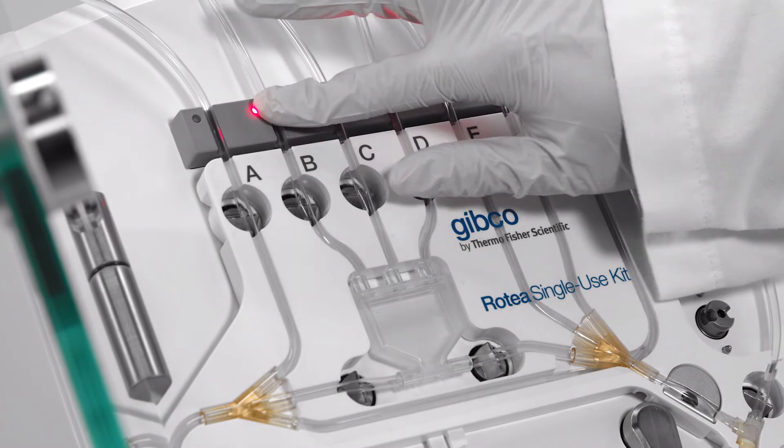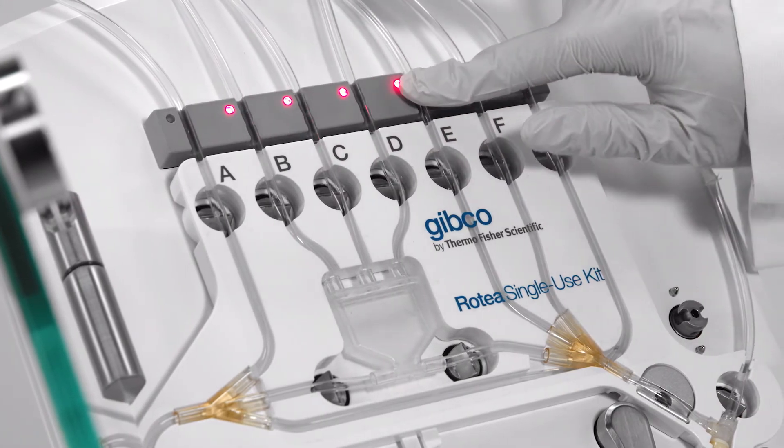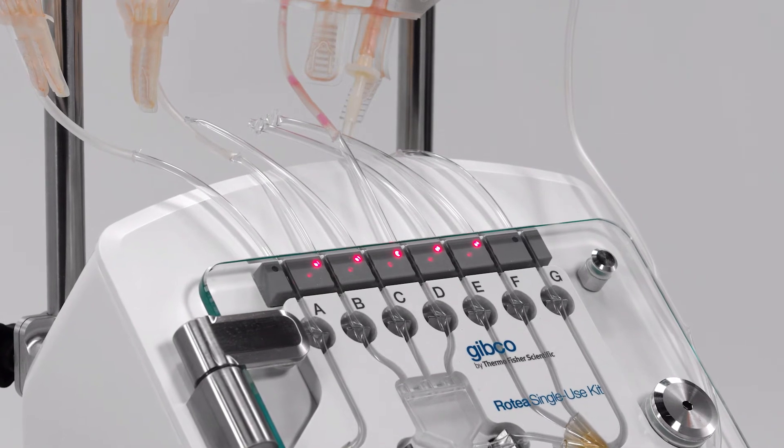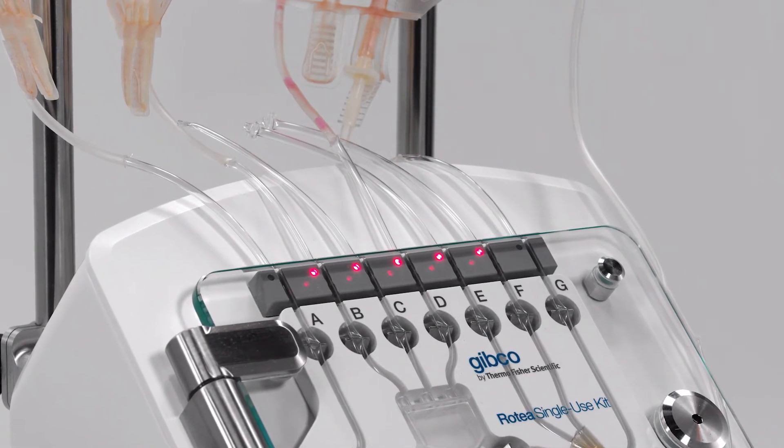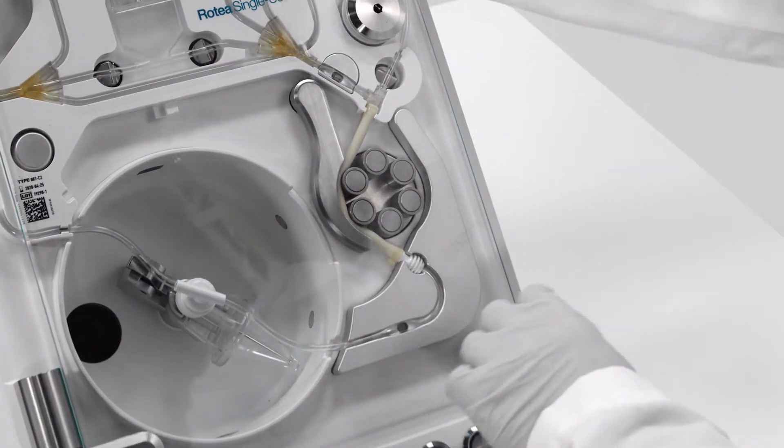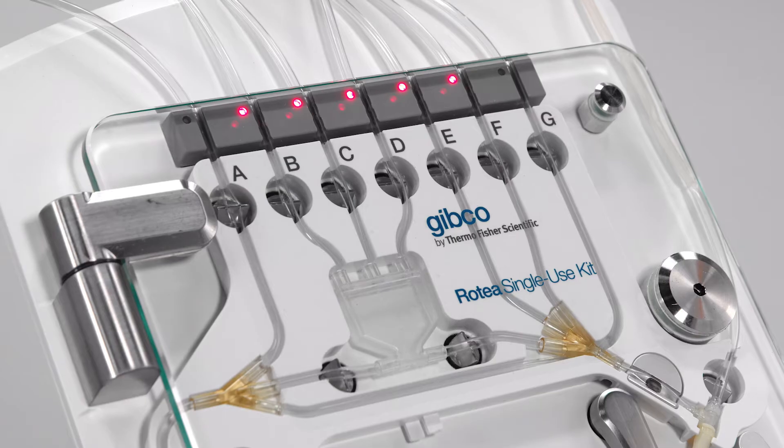Press the tubing from each port on the kit into the tracks along the bubble sensor strip. Make sure the bags aren't tangled so you can easily follow the protocol progress. Lastly, close the door by pressing down on the door latch. The pump clamp will close, the cone will spin, and the valves will close.